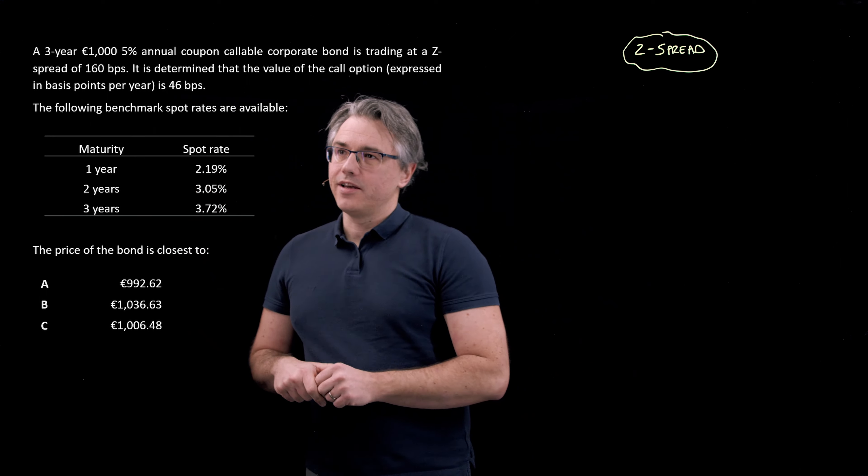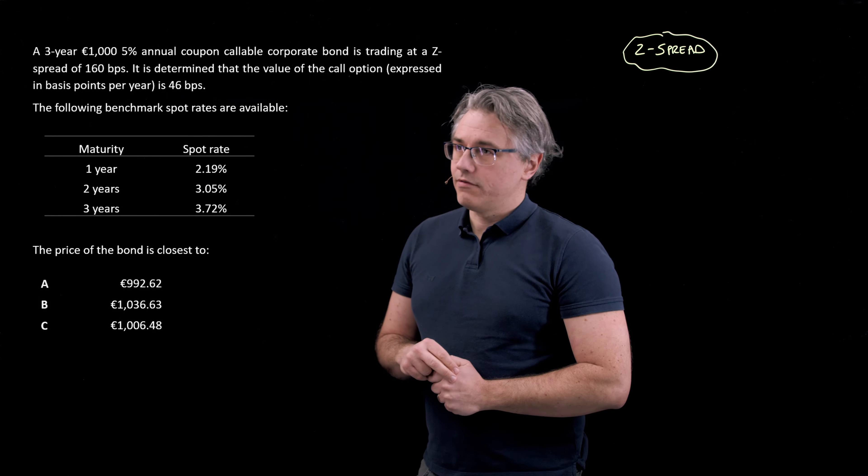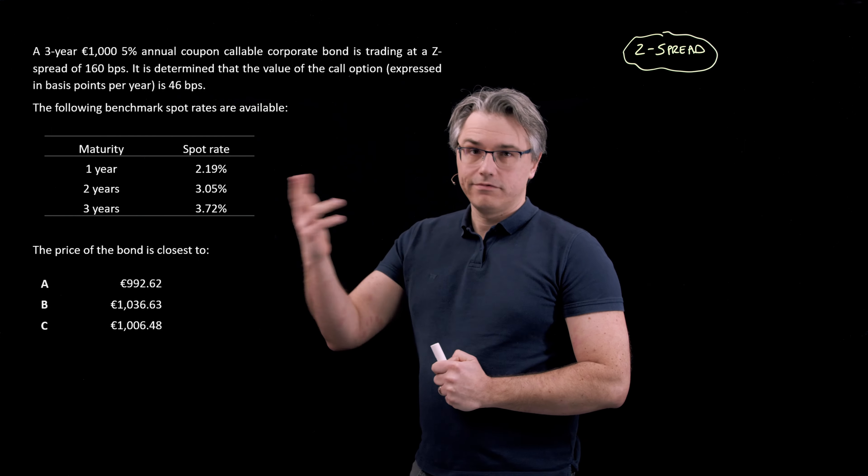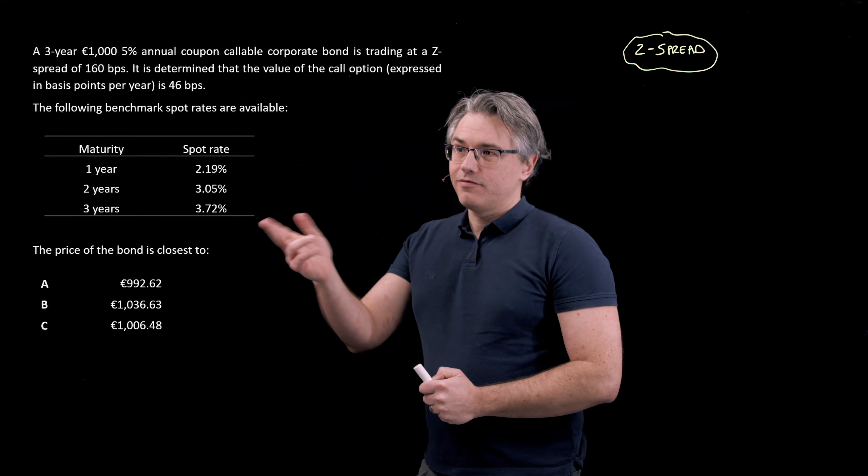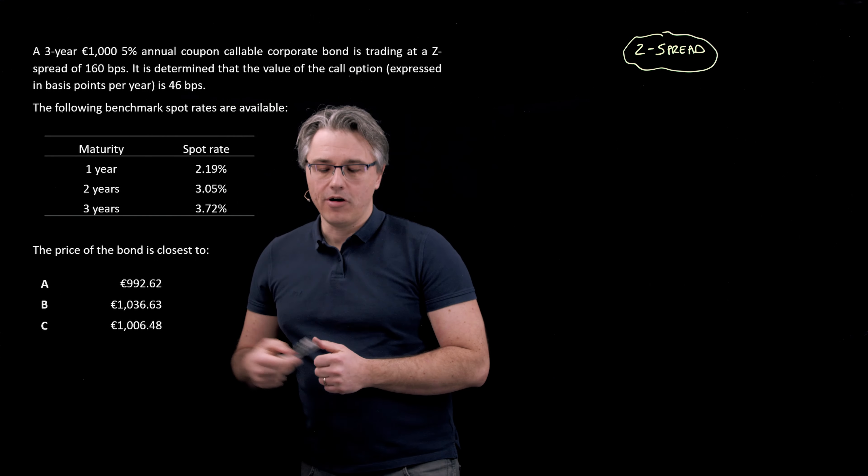The following benchmark spot rates are available. For different maturities, one, two and three years, we've got spot rates of whatever is shown here. First of all, we're asked for the price of the bond. What is it closest to? Three options follow.